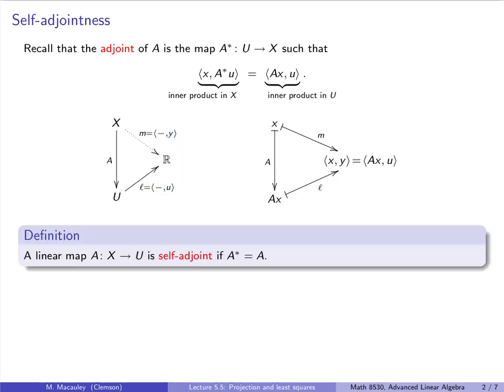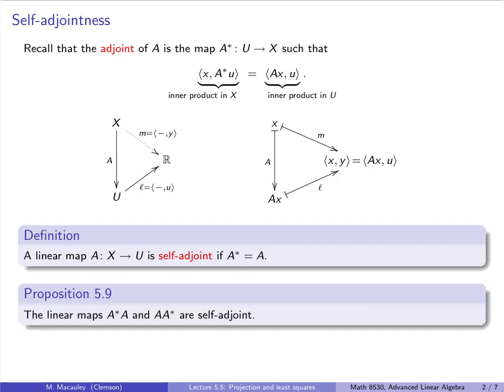We say that a linear map A is self-adjoint if it is equal to its adjoint. This is an important concept that we will see throughout the remainder of this course. And our first example is that for any linear map A, the maps A*A and AA* are self-adjoint.